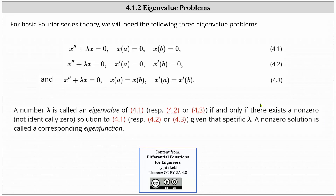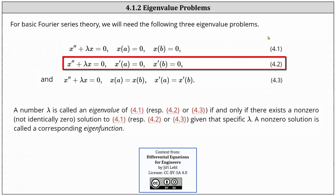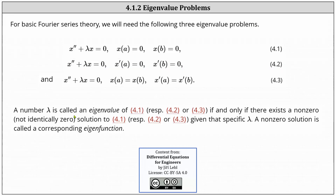In the last lesson we learned that for basic Fourier series, we need three eigenvalue problems. In the last lesson, we solved an eigenvalue problem in the form of 4.1, and this lesson will solve an eigenvalue problem in the form of 4.2. Recall a number lambda is an eigenvalue if and only if there exists a non-zero solution to the problem given that specific lambda. A non-zero solution is called a corresponding eigenfunction.